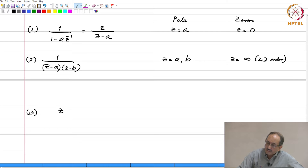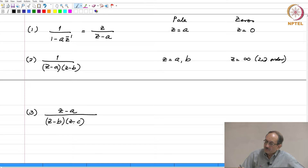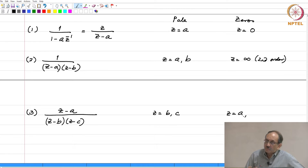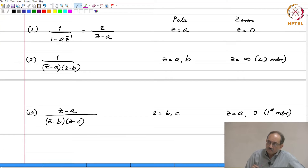On the other hand, suppose you had (z minus a) by (z minus b)(z minus c) in the denominator. Then clearly z equal to b, c are poles. You have a zero at z equal to a, but for extremely large values of z, the numerator behaves as z and the denominator behaves as z squared, and the ratio behaves as 1 over z. Therefore, you can think of this as having a zero at z equal to infinity, and in this case the zero is of first order.